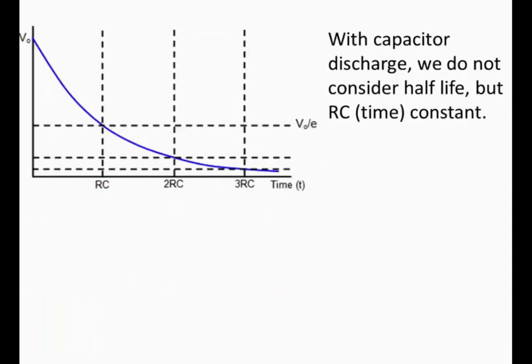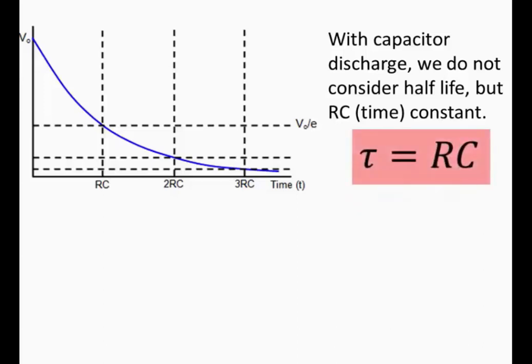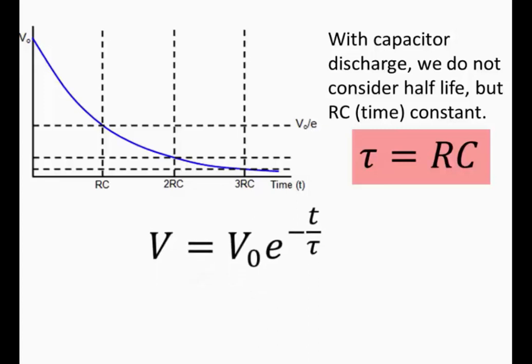With capacitor discharge, we do not consider the half-life but rather the time constant, which is RC. Tau is equal to RC. The equation for voltage, for example, is V equals V₀ e to the minus T over tau, or rather T over RC. Since tau equals RC, you can substitute RC for tau.